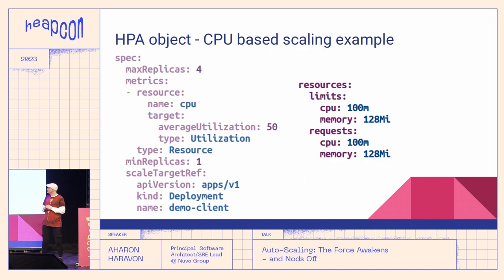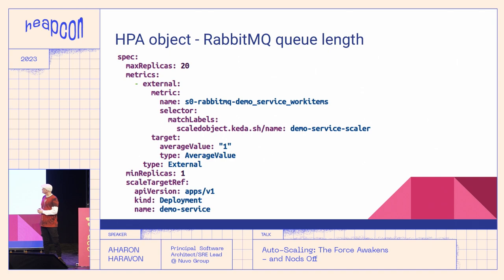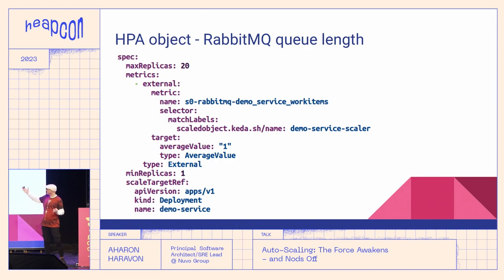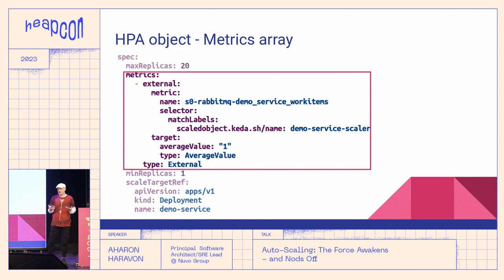When defining autoscaling based on CPU or memory utilization, you need to make sure to also declare the resource requests, because without them this 50% is not defined — it represents 50% of the resource requests. In another example, we see an HPA object that will scale the application based on the RabbitMQ queue length. It has all the required fields: minimum and maximum replicas, the metrics field pointing to a metric, and the scale target reference — in this case 'demo-service'. The metrics array can have more than one element and the metric yielding the largest number of replicas will take effect.